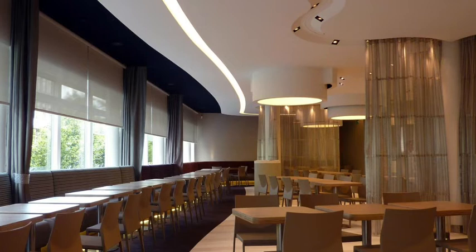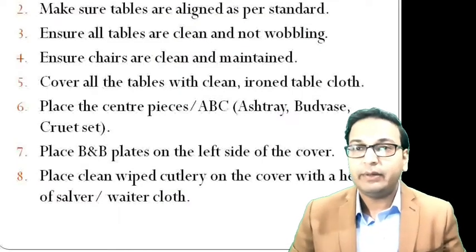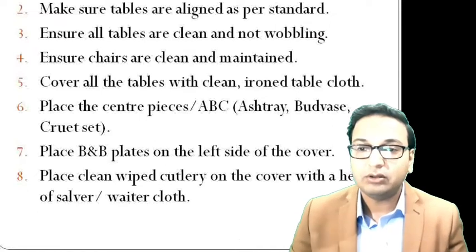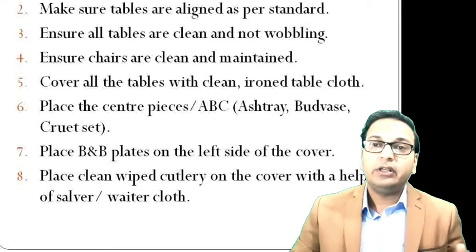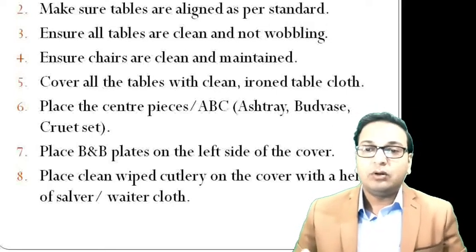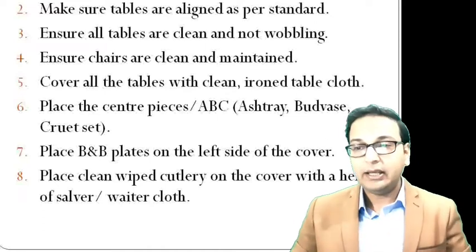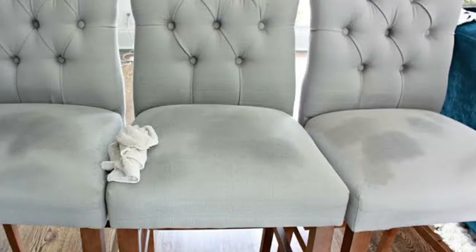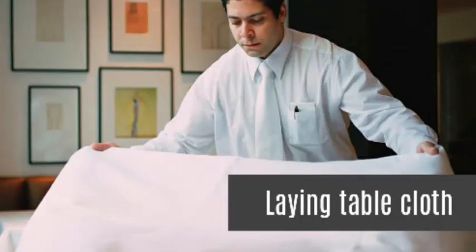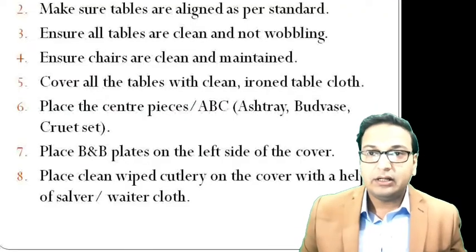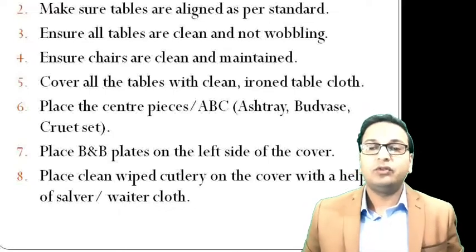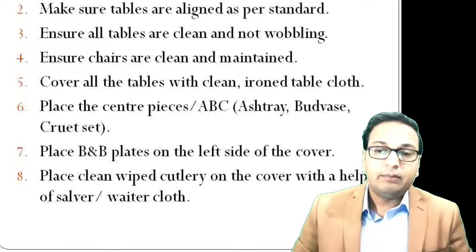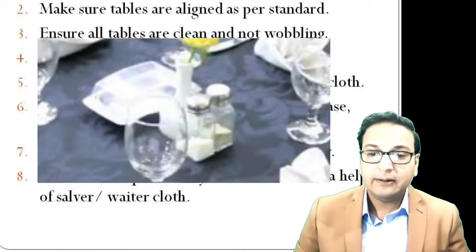Make sure tables are aligned as per standard, because after a busy night with joined tables they may have been moved from their standard positions. Ensure all tables are clean and not wobbling, and chairs are clean and maintained with no damage or stains. Cover all tables with clean, ironed table cloths. For fine dining restaurants, table cloths are the standard — most fine dining restaurants use them. Place the center piece, ashtray, and table numbers in the center.